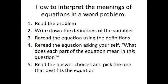There are five steps we're going to go through. The first step, we're going to read the problem. The second step, we're going to write down what those variables — those letters in the equation — mean. We're going to reread the equation using those definitions. Then we're going to reread the equation asking ourselves what does each part of the equation mean in this question. And finally, we're going to read the answer choices and pick the one that's the best fit.